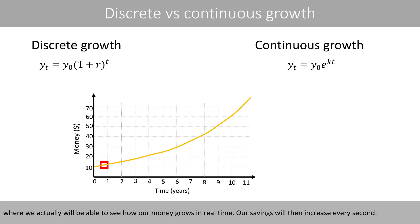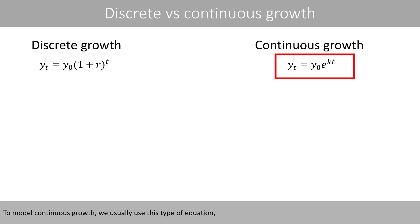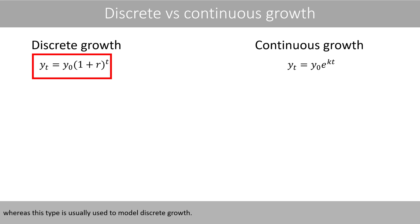With continuous growth, we would actually be able to see how our money grows in real time — our savings would increase every second. Continuous growth is usually what we observe in nature. For example, a plant is growing continuously during a day and not stepwise. To model continuous growth, we usually use the equation with E and K, whereas the equation with A is usually used to model discrete growth.